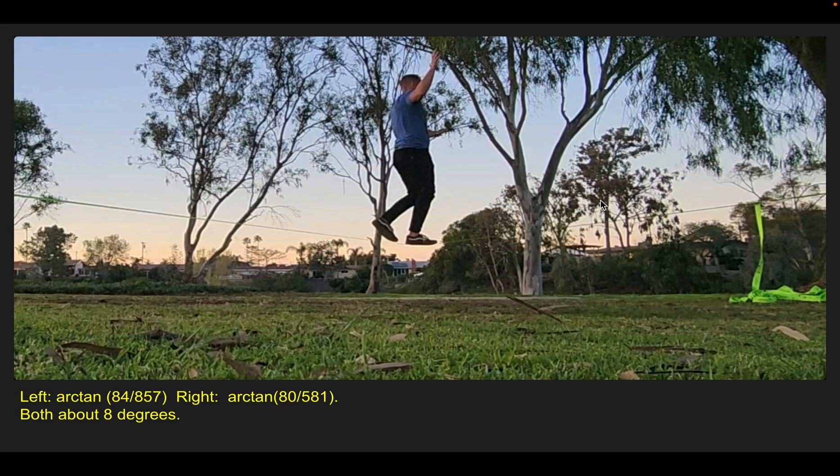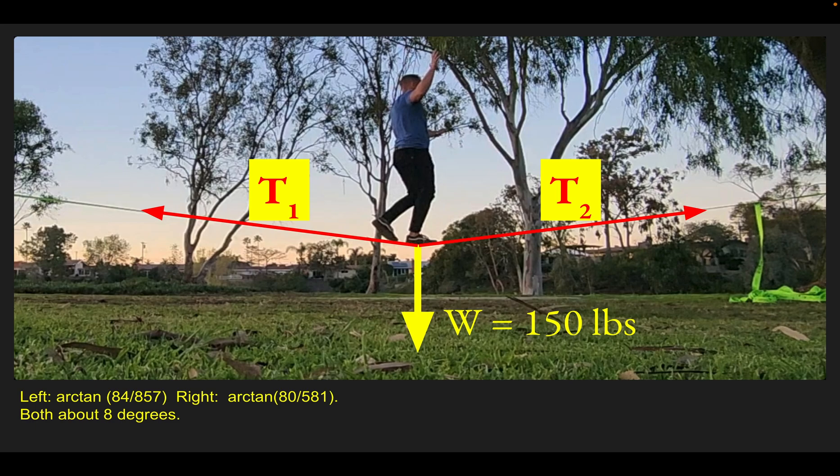We'll begin by drawing forces on the central point of the line. Pushing downward would be my weight, 150 pounds. Another force acting on this point would be the tension in the line pulling to the left, and another force would be the tension pulling to the right.